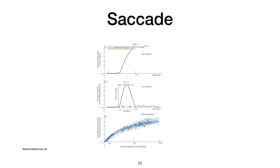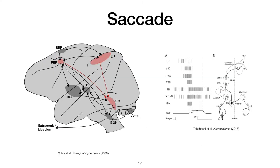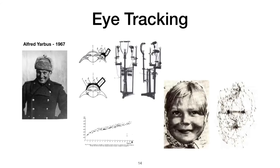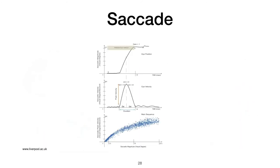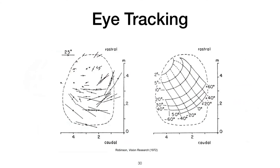The term 'main sequence' is borrowed from astronomy, where stars plotted in a similar scatter pattern form what is called the main sequence. Yarbus had already plotted saccade duration versus amplitude with striking accuracy — comparable to what modern eye trackers like the EyeLink produce.